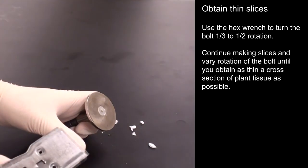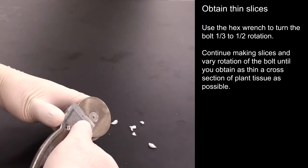Continue making slices and vary the rotation of the bolt until you obtain as thin a cross section of plant tissue as possible.